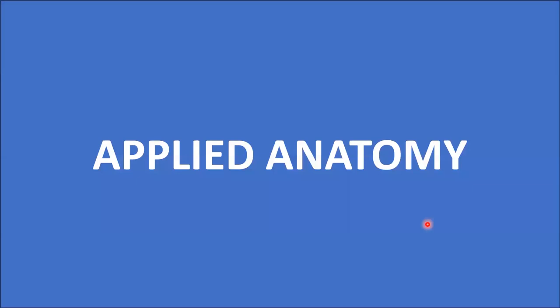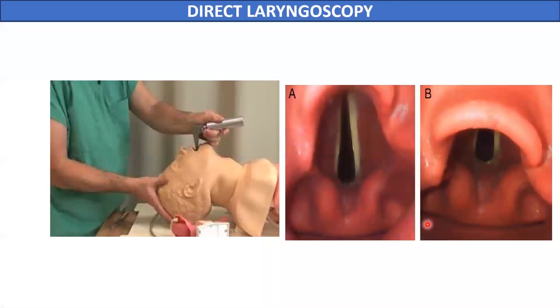We will discuss the applied anatomy related to the larynx. The larynx can be visualized directly with the help of an instrument called a laryngoscope. This procedure is called direct laryngoscopy. Using this, we can visualize the true and the false vocal cords.